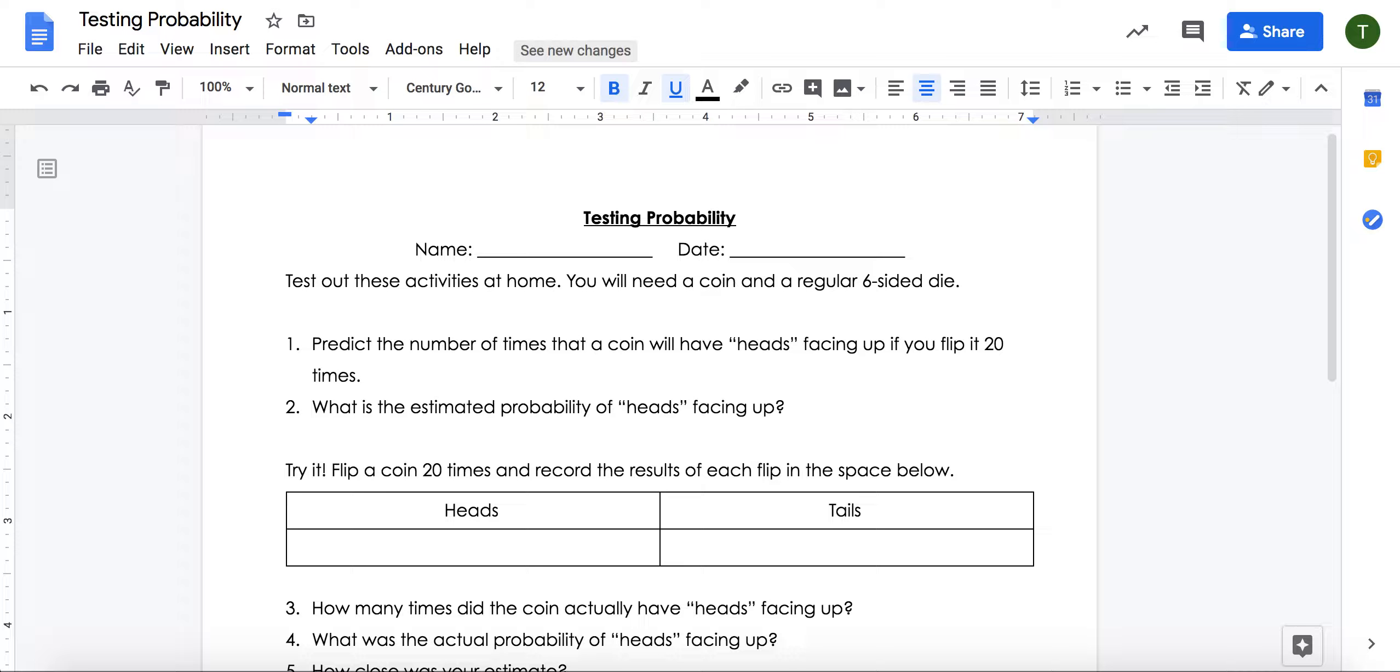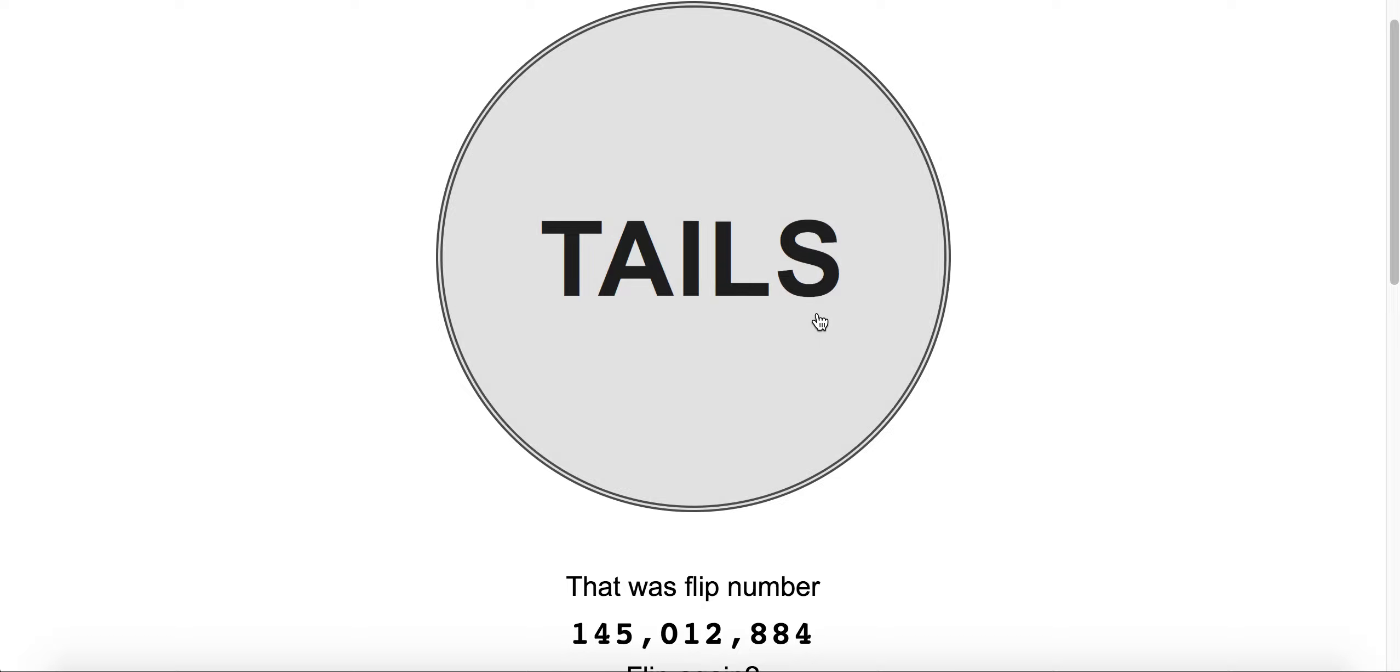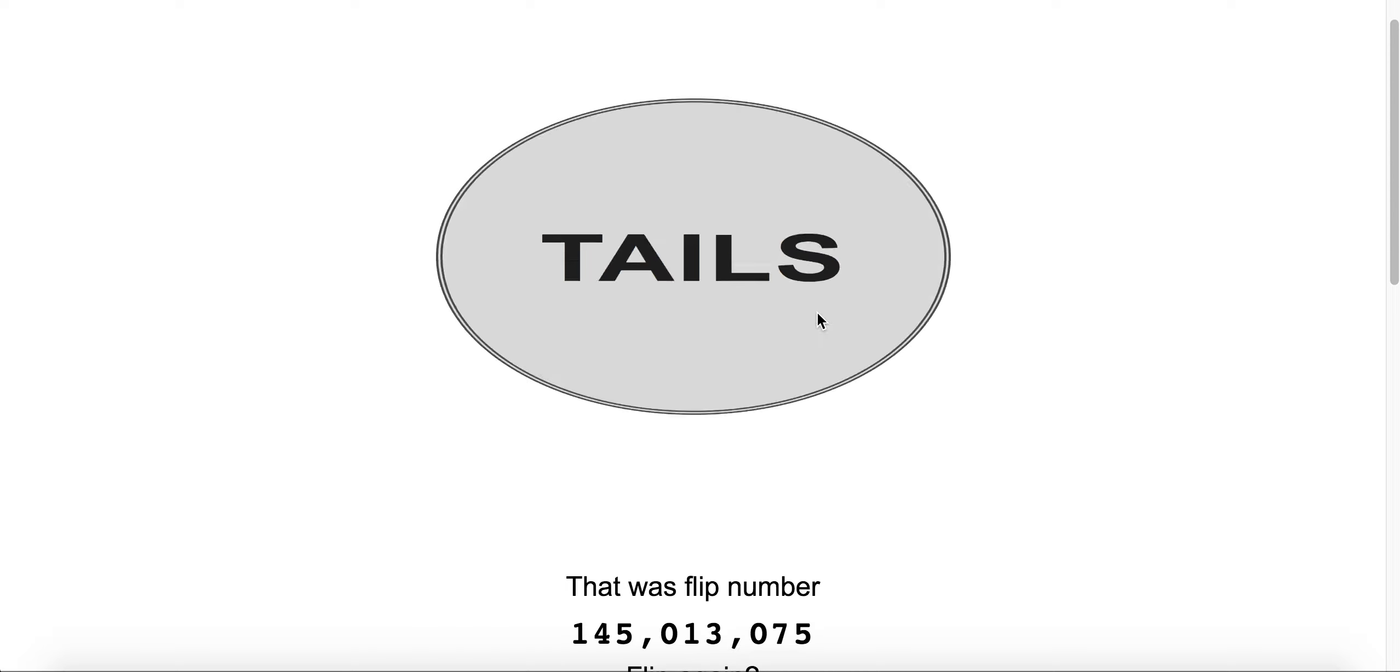If you cannot find a coin at home, I've included a website called justflipacoin.com. It was pretty easy. It's literally just a coin that says tails on one side, heads on the other. In order to use this, go to the website justflipacoin.com. And when you click, it flips the coin. So this would count as one flip of heads.